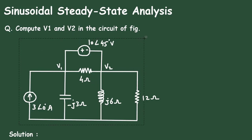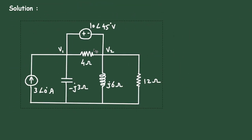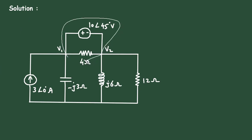First of all, let us take the circuit. Now here we can see between node V1 and V2, there is a voltage source. So this forms a supernode — from here to here, this is called a supernode.